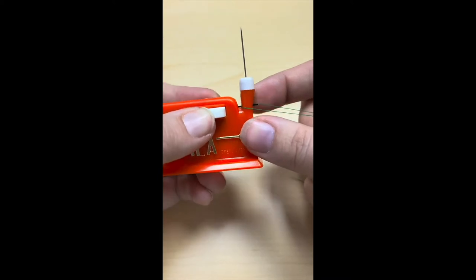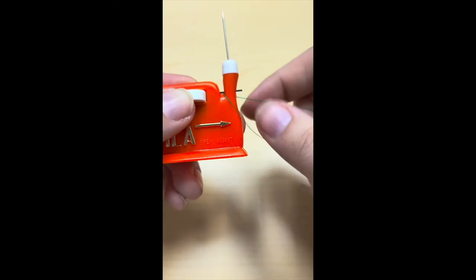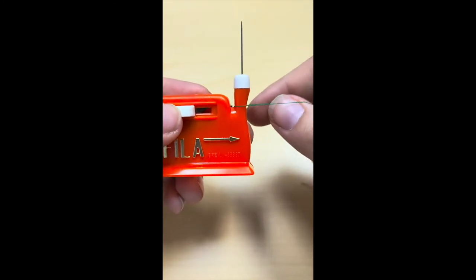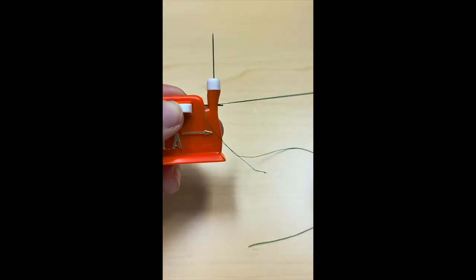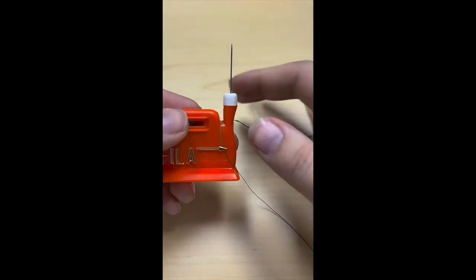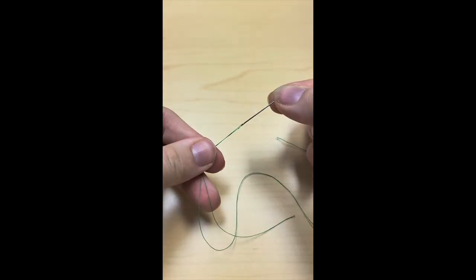When you have the thread in place around the chimney, you will slide the lever to the right. And then when you have the needle threaded around the metal clip that goes through the eye of the needle, pull it through and there you have it.